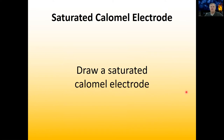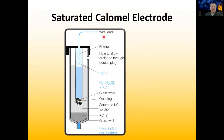Hopefully you drew that out. It's also a good idea to do the same thing with the standard hydrogen electrode and the saturated silver chloride electrode. Your saturated calomel electrode should have looked something like this. Of course you don't have to use color, but every once in a while a student brings colored pencils into an exam — makes it look great.